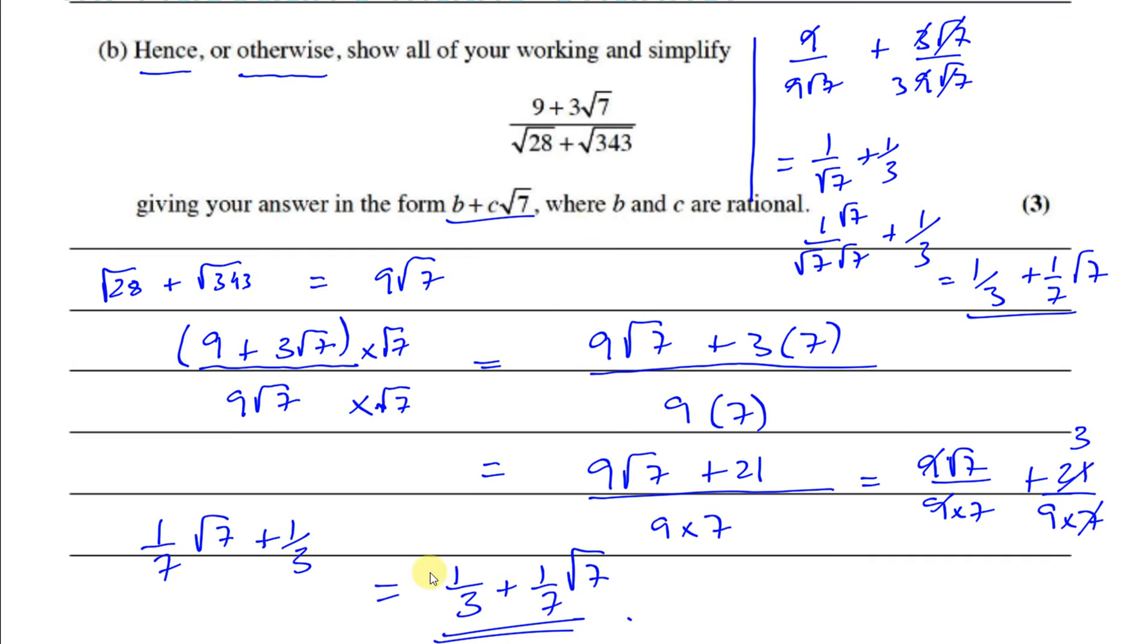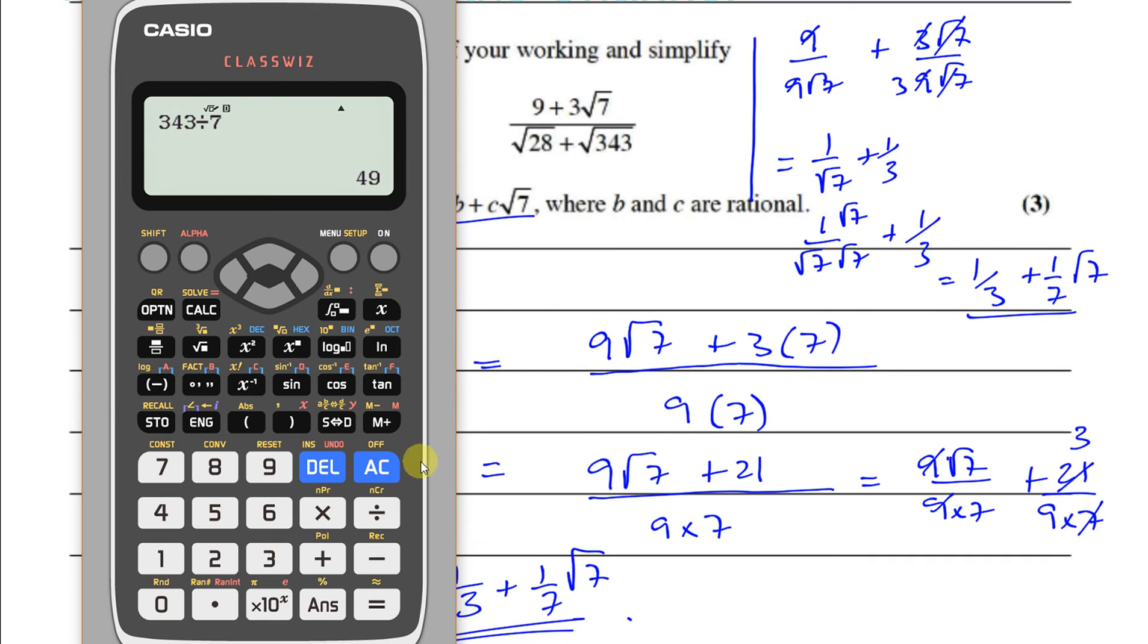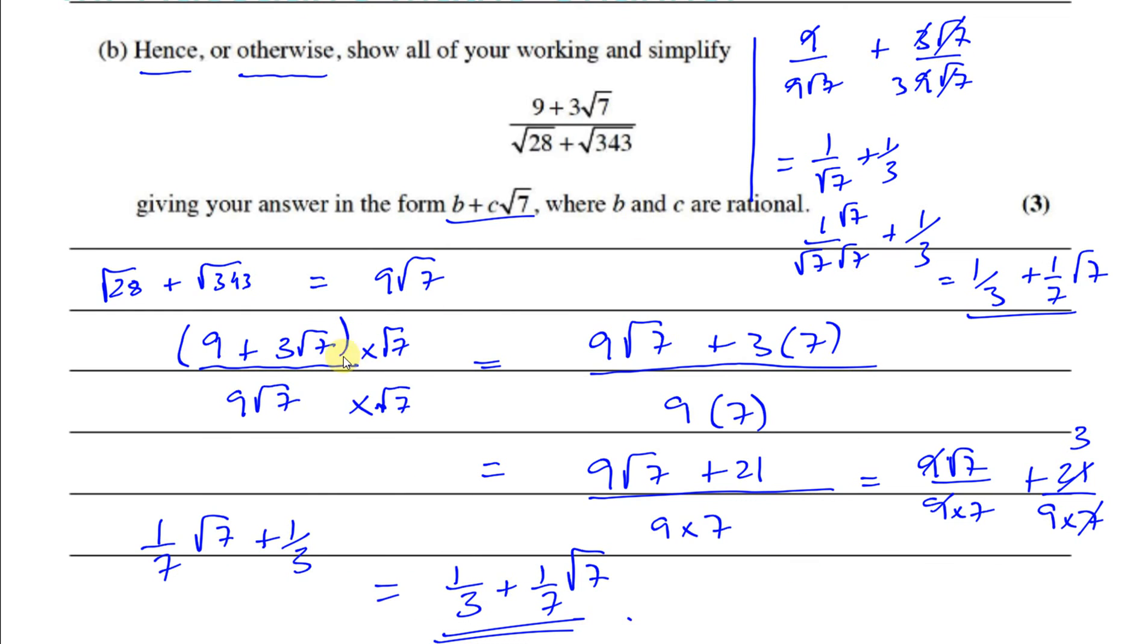But what you can't do is just, if you just type this in your calculator, I'll show you again. If you make a fraction and you put 9 plus 3 times root 7 divided by root 28 plus root 343, you just type that in your calculator, it basically gives you your answer as one fraction you can just split up. As I said, it's a good way for you to check your answer, but don't just write the answer down. You'll get zero marks. Don't just write a whole lot of nonsense down and then write the answer down thinking that you can trick the examiner. You have to show your steps clearly.